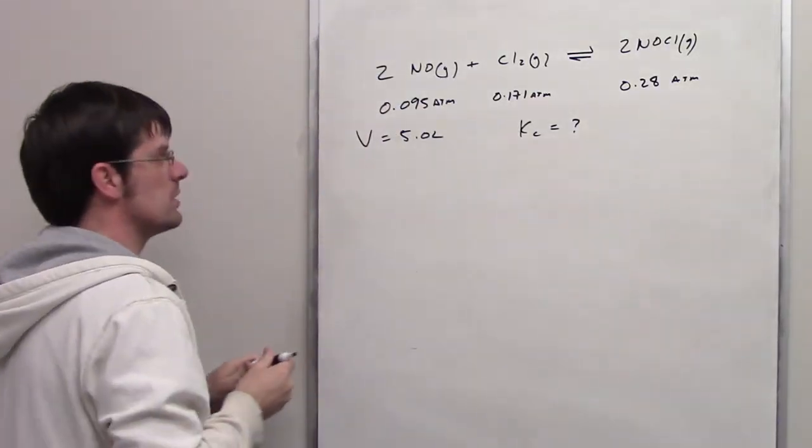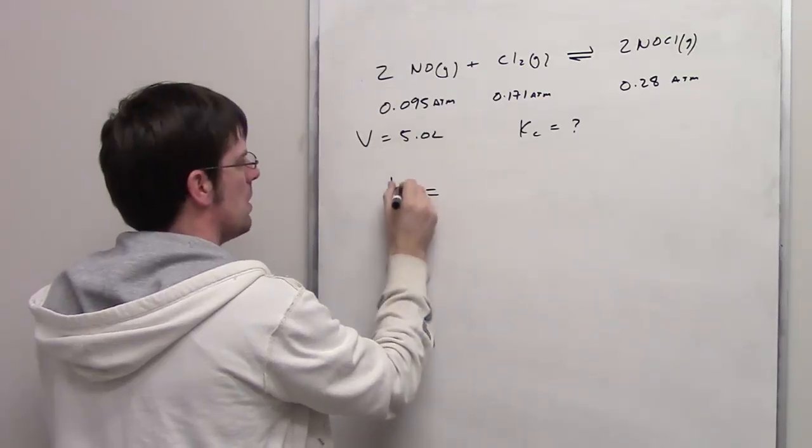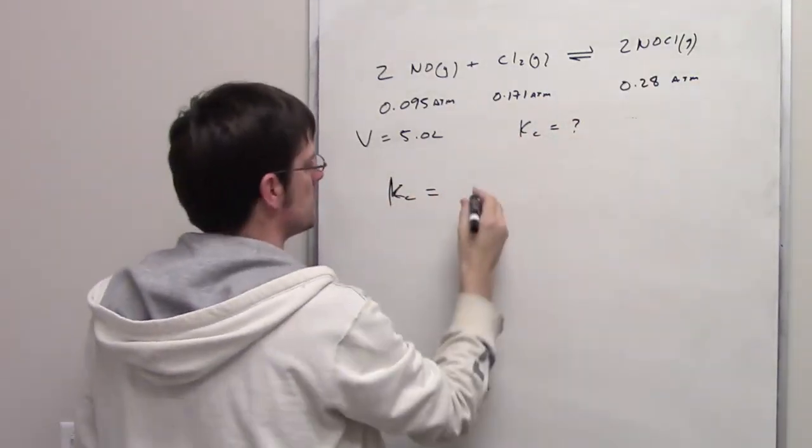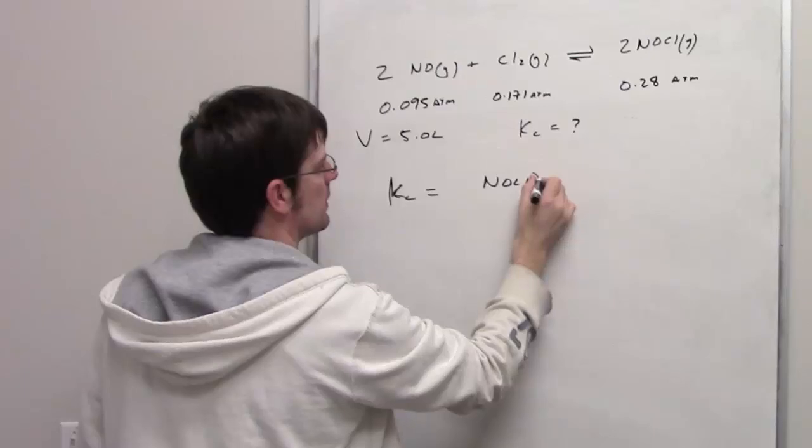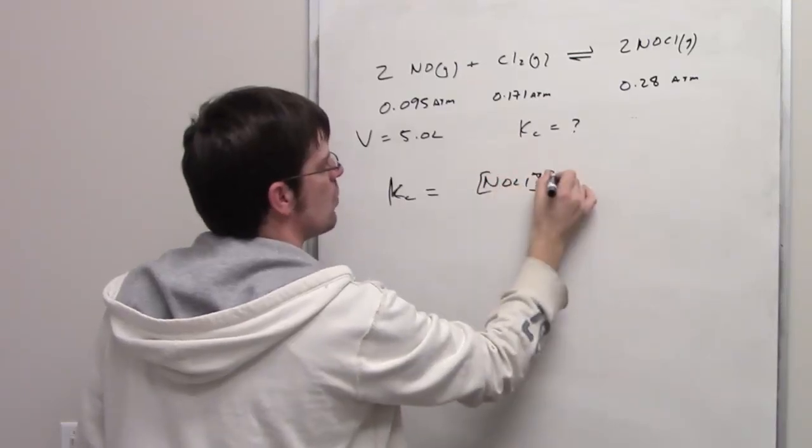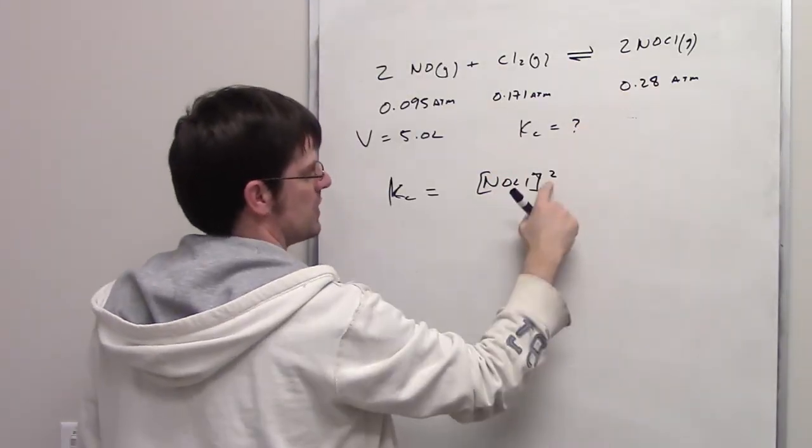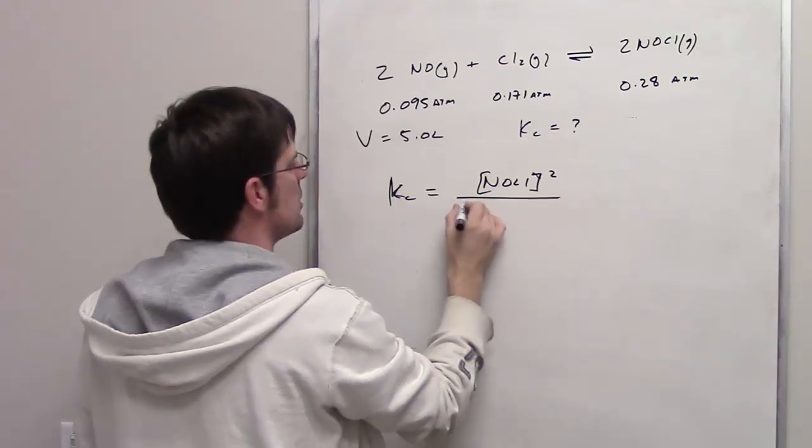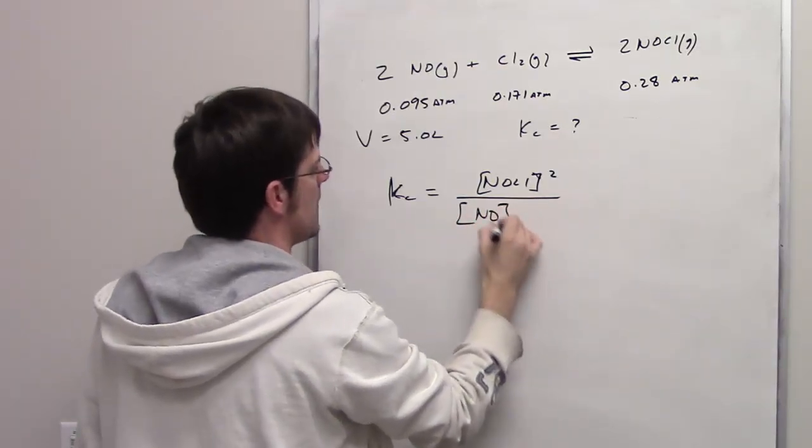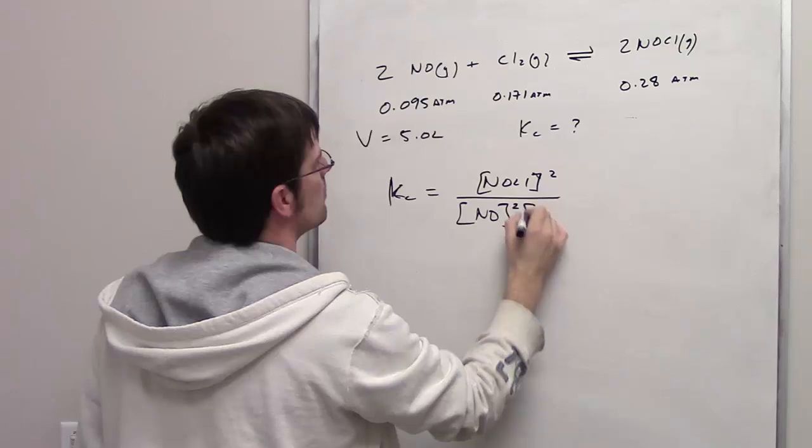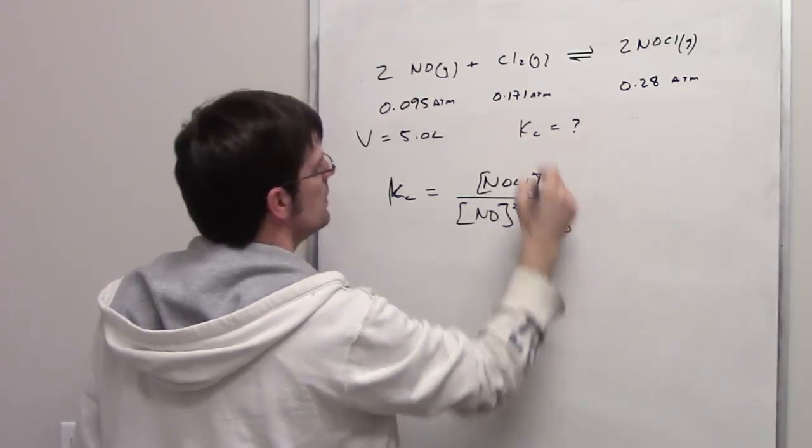Kc, as we look at this, is of course going to be equal to the concentration of the product squared, because the number 2 is the coefficient here, it becomes an exponent divided by the concentrations of the reactants, in this case NO squared, multiplied by the concentration of Cl2 to the first power.